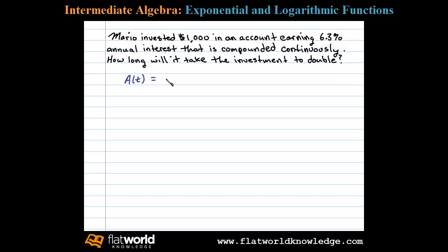A(t) equals P times e to the rt power. Now in this case, P is the principal, r is the annual interest rate, and t is the time, in this case measured in years. And so we have A(t) equals P. The principal in this case is one thousand dollars.